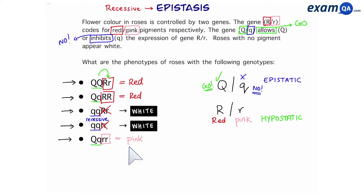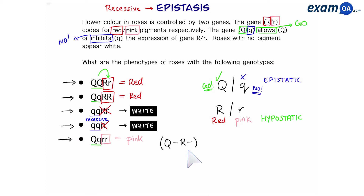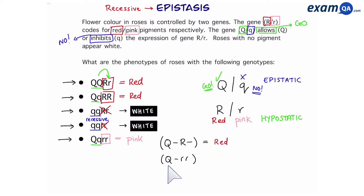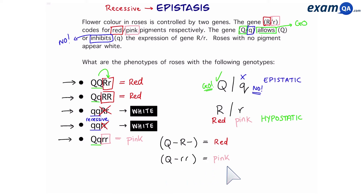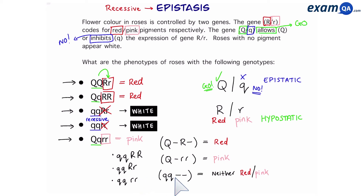To summarize: any genotype with a big Q followed by either big Q or small Q, then big R followed by either big R or small R — any of those four combinations — will be red. Any genotype with big Q followed by big Q or small Q and then two small r's will be pink. And if you have two small q's, it doesn't matter what the next two alleles are — those individuals will be white.